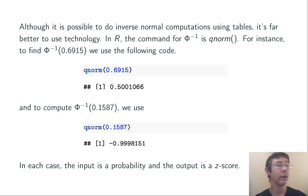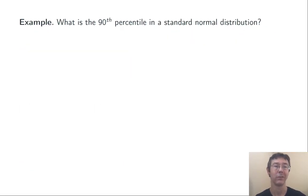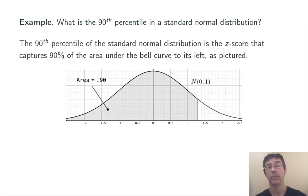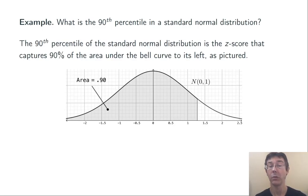Remember, when you're doing inverse normal calculations, the input is a probability and the output is always a z-score. Let's look at a couple of examples. First, let's find the 90th percentile in a standard normal distribution. This means the z-score that captures 90% of the area under the bell curve to its left, as shown in this picture.